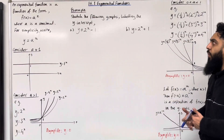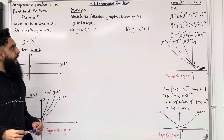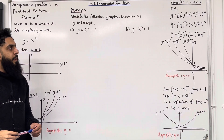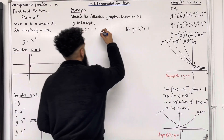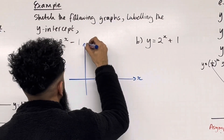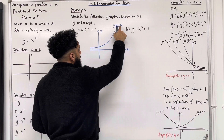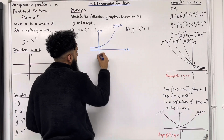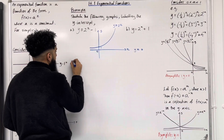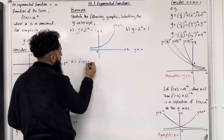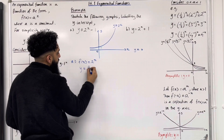These are the key facts of 14.1 exponential functions. Let's go through an example: sketch the following graphs labelling the y-intercept. Part a: y = 2^x − 1. Part b: y = 2^(x+1). I'm going to start by sketching y = 2^x. Substituting x = 0 gives y = 2^0 = 1, so the y-intercept is 1 and the asymptote is y = 0. For part a, setting f(x) = 2^x, the equation y = 2^x − 1 is f(x) − 1.